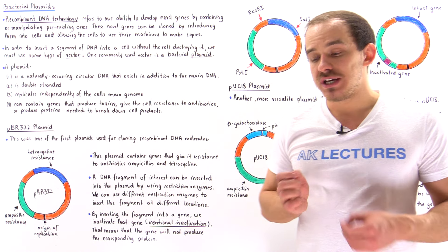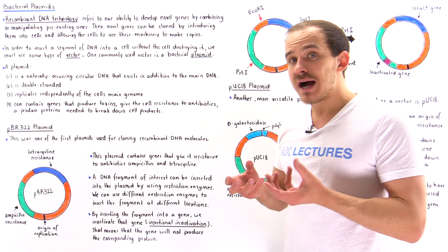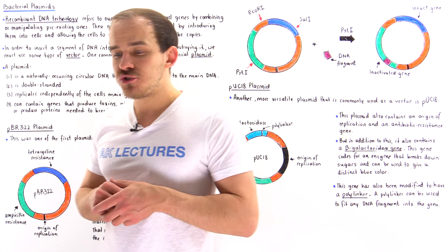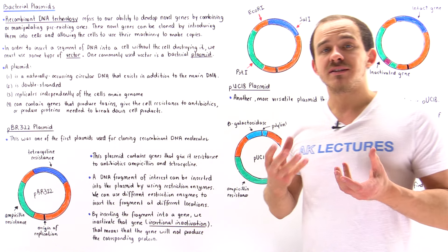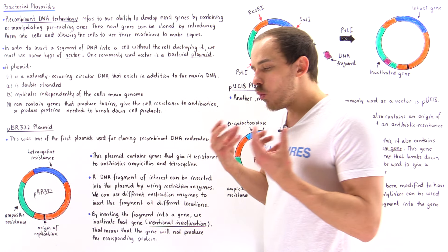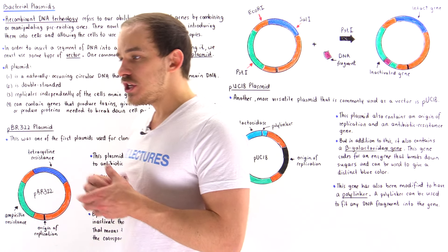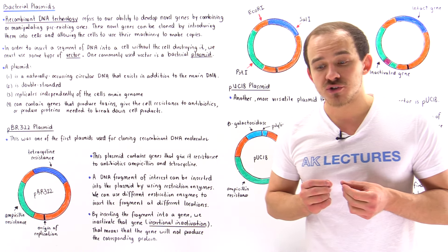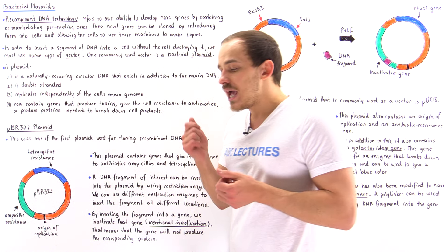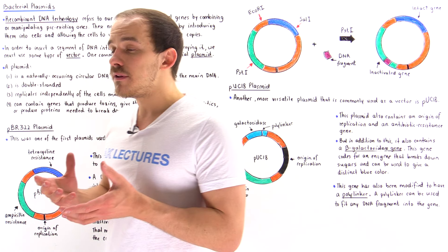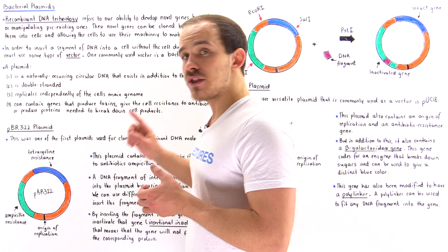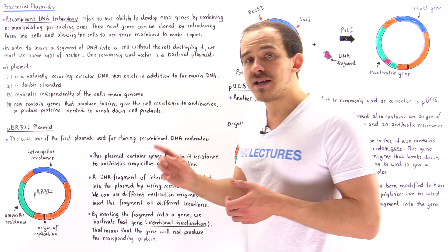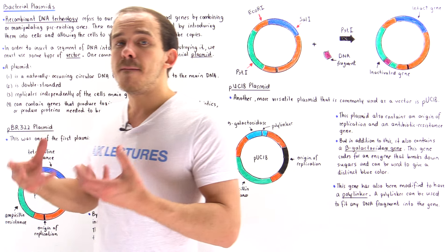Recombinant DNA technology involves manipulating or modifying pre-existing genes to form new novel genes known as recombinant genes that did not exist before. Once we form the recombinant gene, the next logical step is to clone our gene to make many copies. One way we can amplify the gene of interest is by introducing that novel gene into a cell and allowing the cell to replicate that gene many many times.